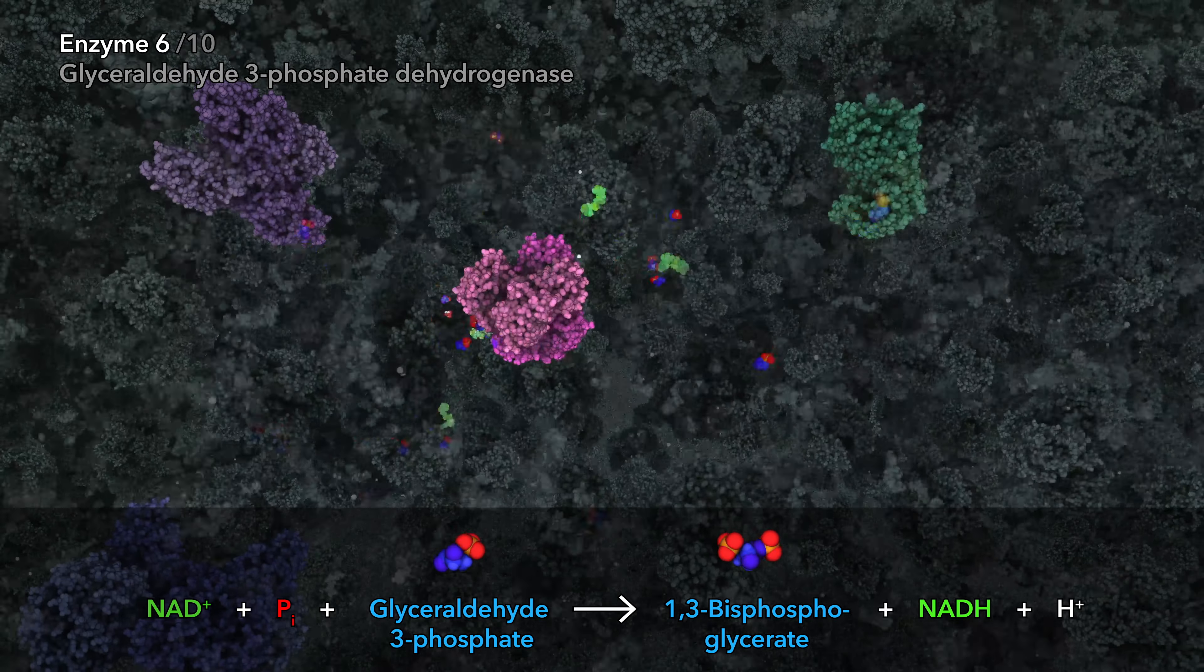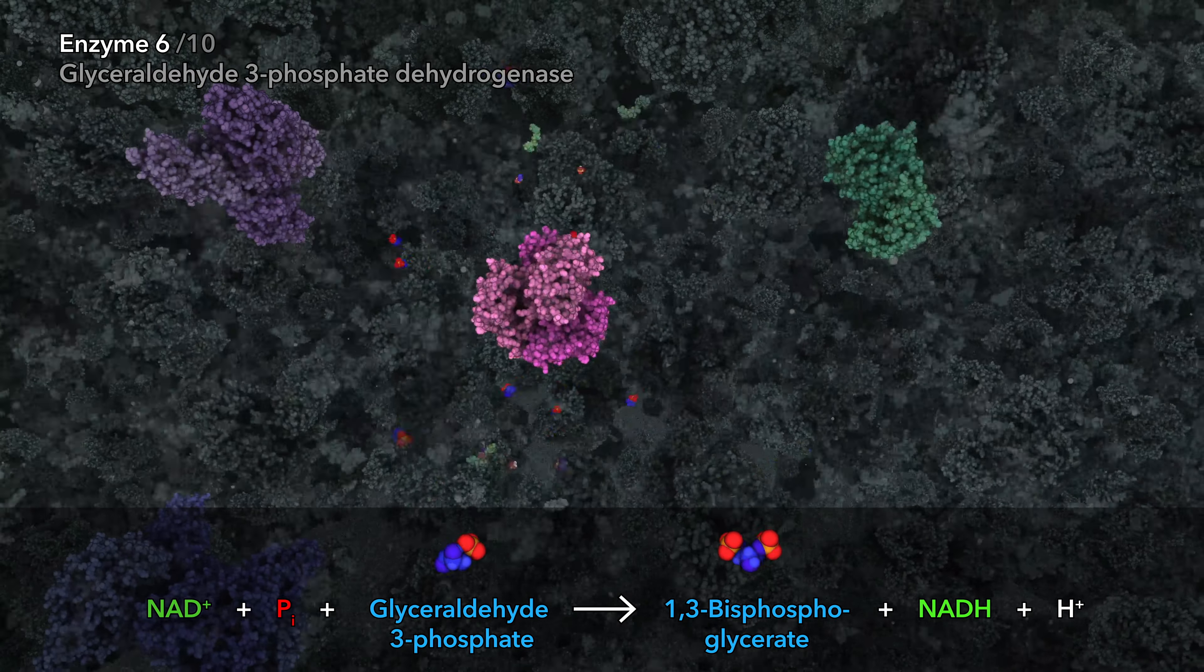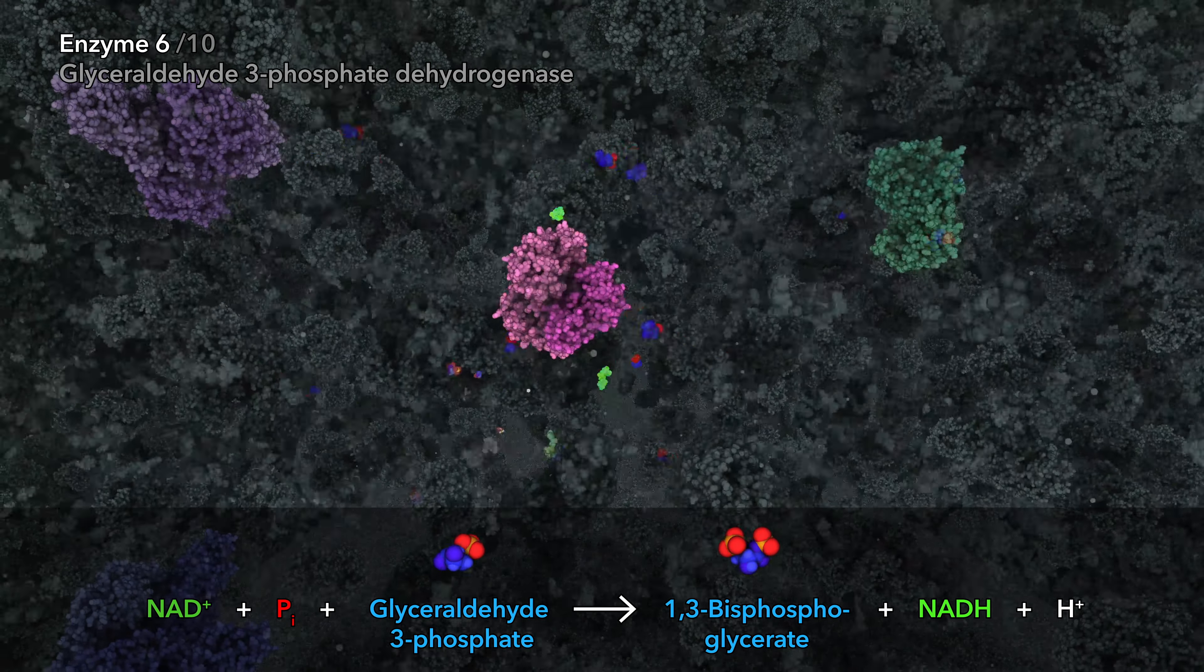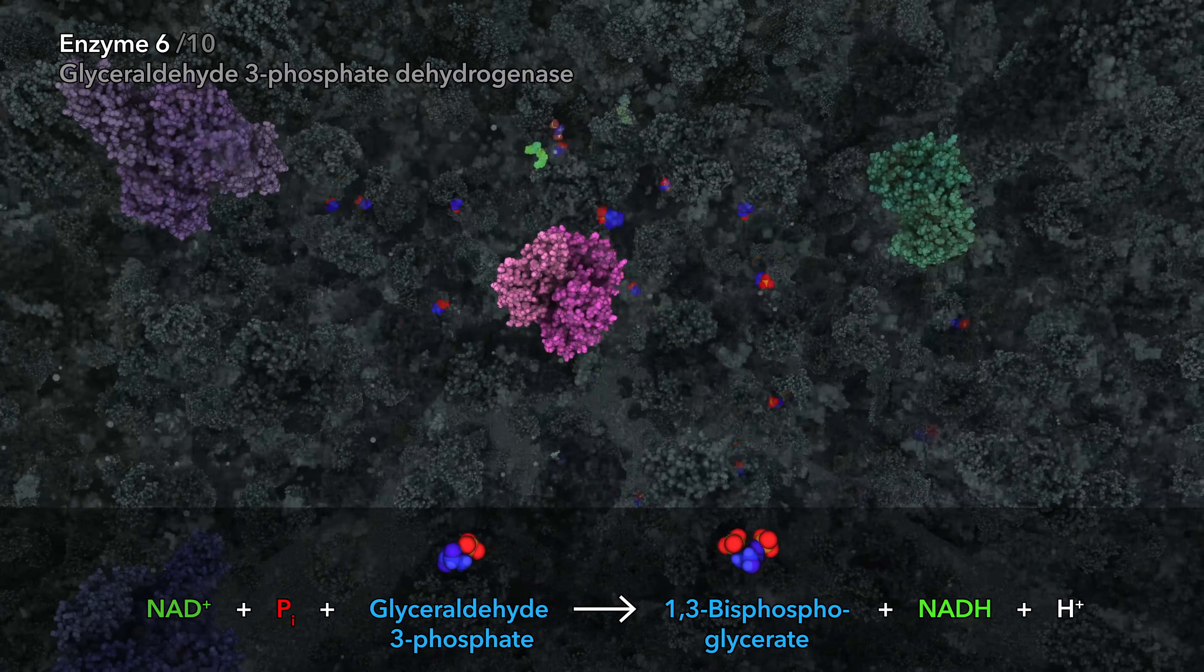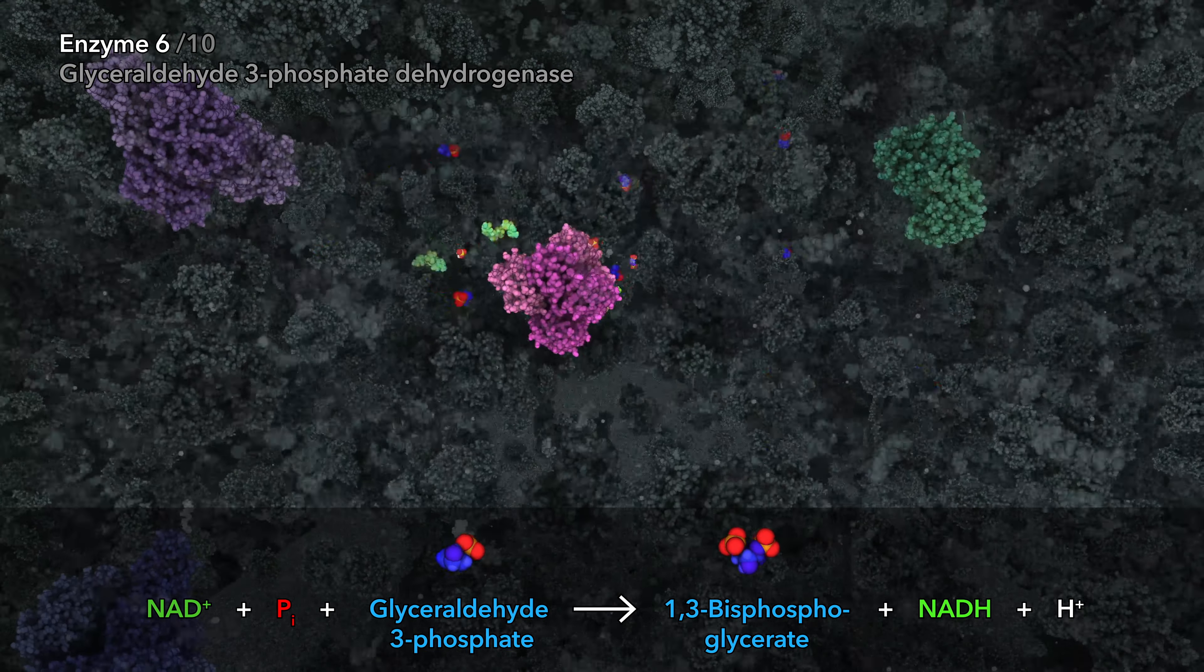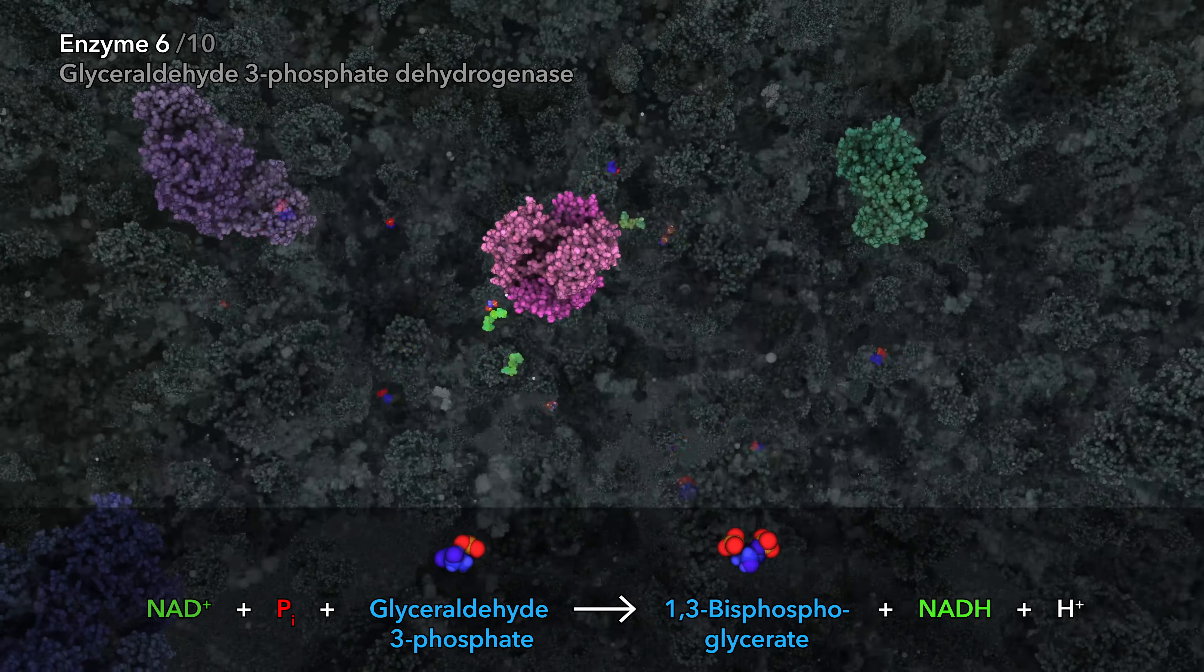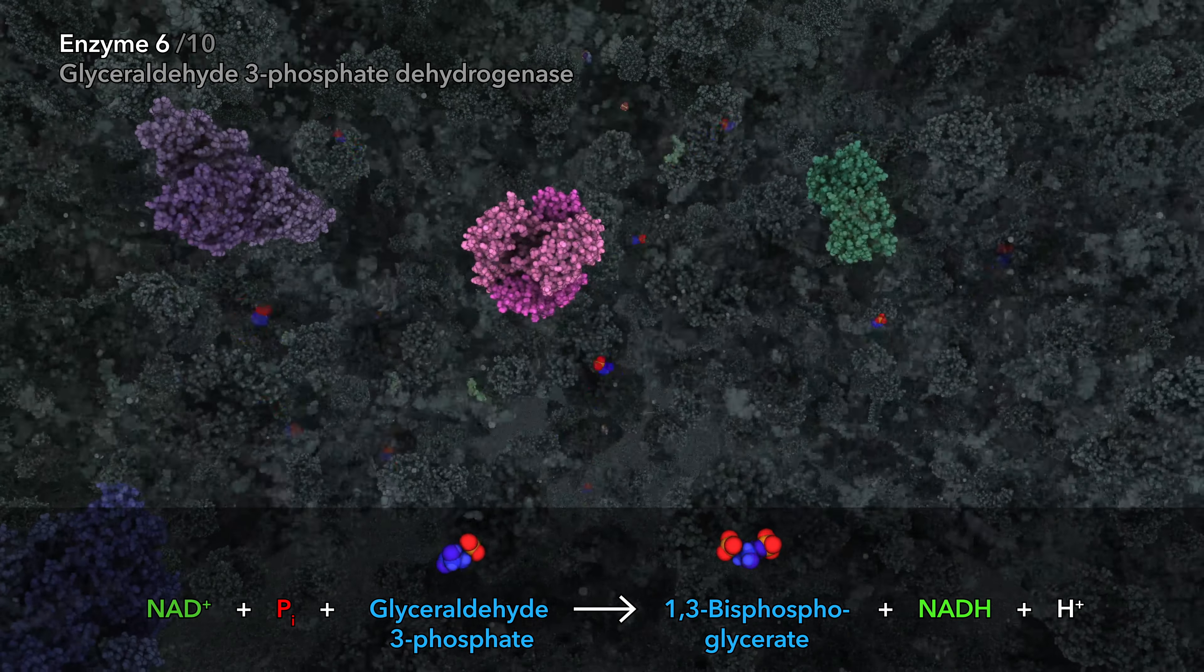The sixth enzyme adds a second phosphate to glyceraldehyde-3-phosphate, creating 1,3-bisphosphoglycerate, while two electrons are transferred to NAD+, which is reduced to NADH.